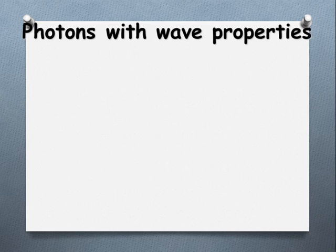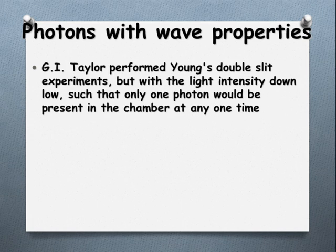It always acts as one or the other. So to further complicate it, we have G.I. Taylor. He enters and performs the double-slit experiment. But he does it with such low-intensity light that theoretically there can only ever be one photon in the chamber at any given time. So no interference can occur.